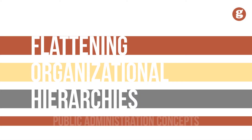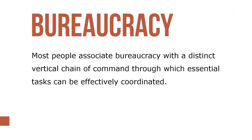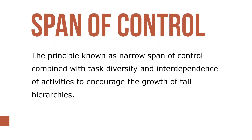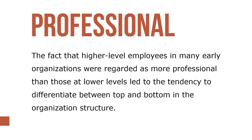Let's take a look at the concept of flattening organizational hierarchy. Most people associate bureaucracy with a distinct vertical chain of command through which essential tasks are effectively coordinated. Tall hierarchies evolved out of a combination of criticisms and organizational factors present in many early bureaucracies. The principle known as span of control, combined with task diversity and interdependence of activities, influenced the overall growth of tall hierarchy. The fact that higher-level employees in nearly every organization were regarded as more professional than those at lower levels led to the tendency to differentiate between top and bottom in organizational structure.